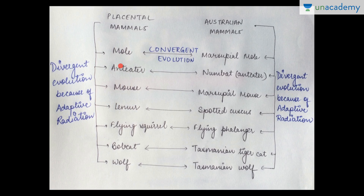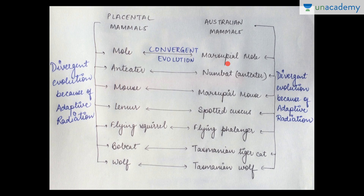Placental mammals undergoing divergent evolution through adaptive radiation include the mole, anteater, mouse, lemur, flying squirrel, bobcat, and wolf. Australian marsupials similarly include the marsupial mole, numbat, anteater, marsupial mouse, spotted cuscus, flying phalanger, Tasmanian tiger cat, and Tasmanian wolf. These represent two separate adaptive radiations in isolated geographical areas with different habitats, leading to convergent evolution.